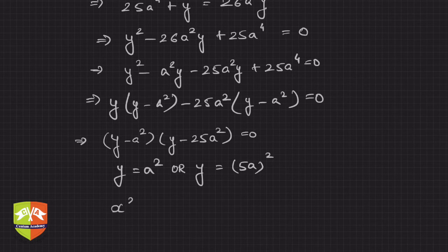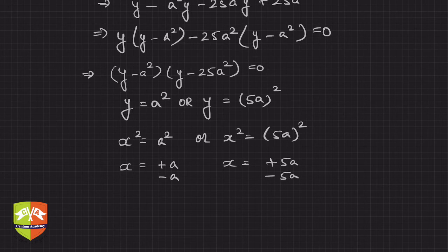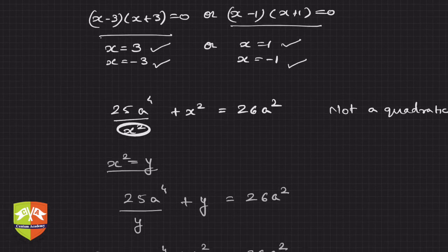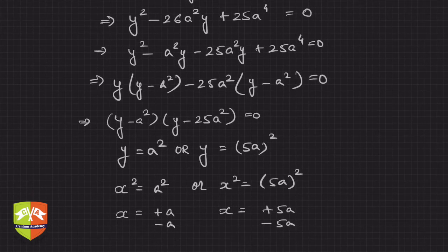Substituting back: x squared equals a squared or x squared equals 5a whole squared. That means x equals plus a or minus a, and x equals plus 5a or minus 5a. These are the four solutions to the given equation. So the key learning is: we can reduce such types of equations into quadratic form and solve using the standard methods for quadratic equations. And as expected, a degree-4 equation gives four roots.